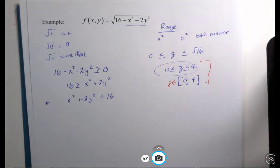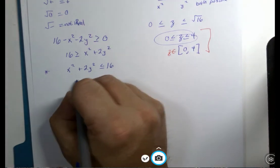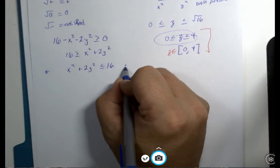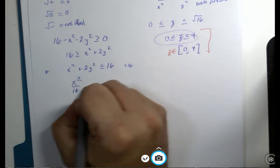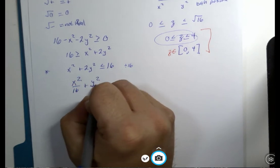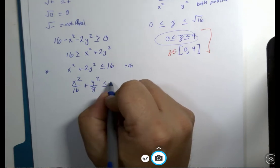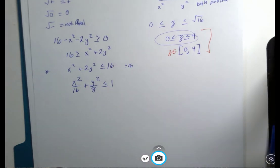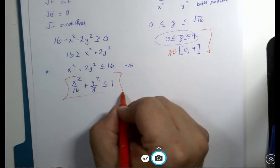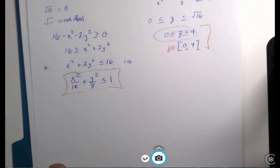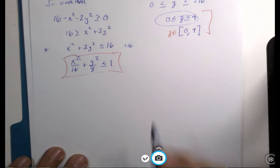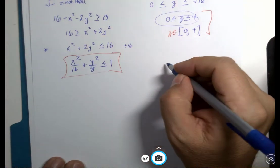The visual for this will be found by dividing both sides by 16: x²/16 + y²/8 ≤ 1. My students and I guess you guys remember what that graph is. Why yes, that is an ellipse.